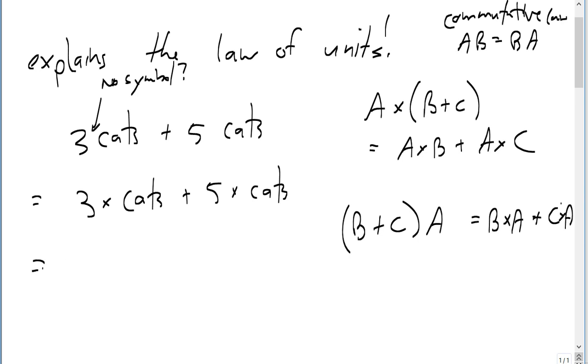But anyway, what it does is it means you can go three plus five times cats. Which is eight cats. Now obviously, you don't have to do it out that way. This is just explaining why the law of units. When you have two things with the same units, it's like you can factor out that unit.